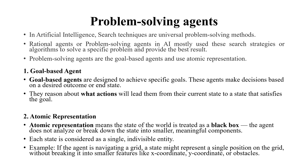For example, if the agent is navigating a grid, a state might represent a single position on the grid. So the agent does not know the x-y coordinates or whether there are any obstacles — it has no knowledge of that. It only focuses on the current state: a single position on the grid. That is what atomic representation means.